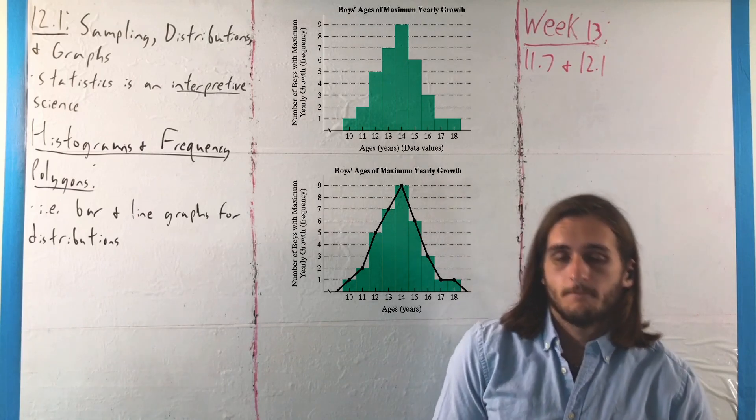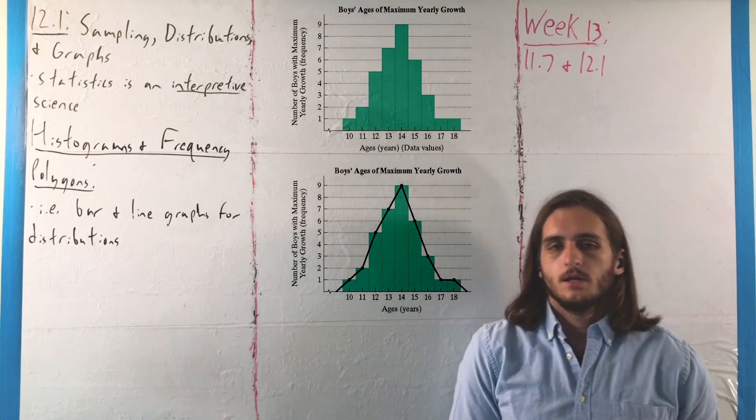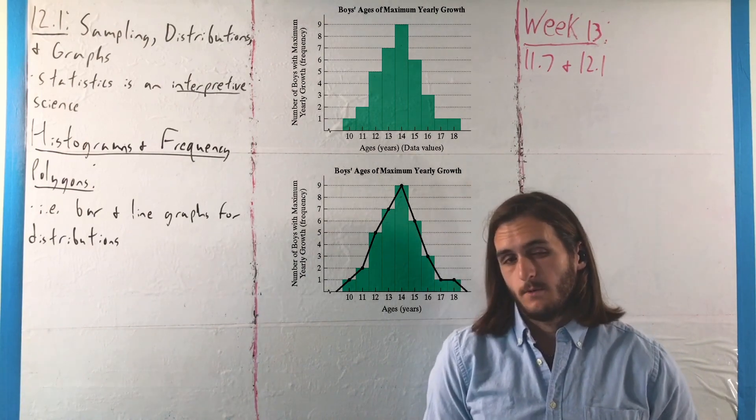Next, instead, we're going to talk about a different sort of picture we can make, which we call a stem and leaf plot, to group up our data in a different way.